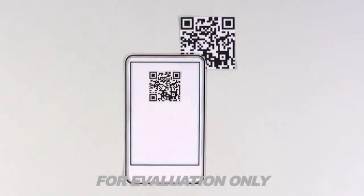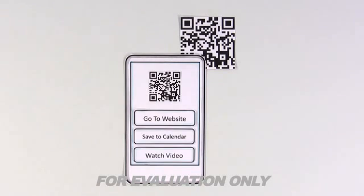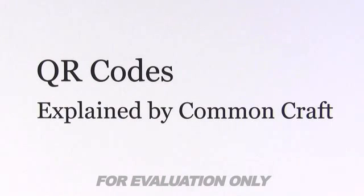Well, these days, new kinds of codes are appearing that are scannable with camera phones. And like a cashier scanner, they create shortcuts to all kinds of information. This is QR Codes, explained by Common Craft.